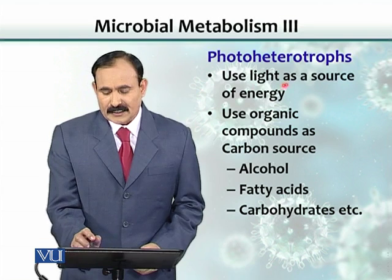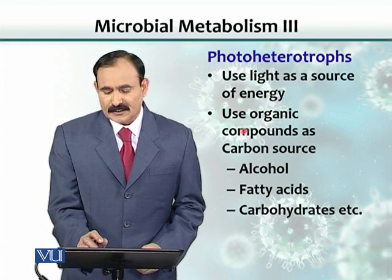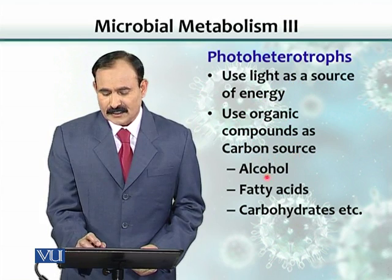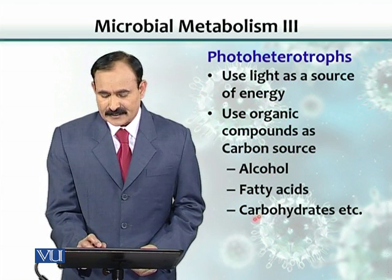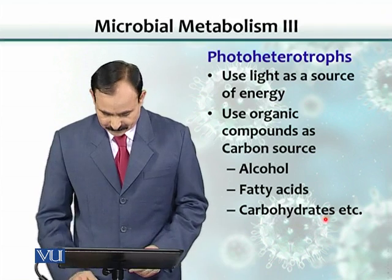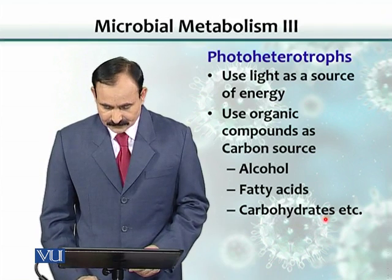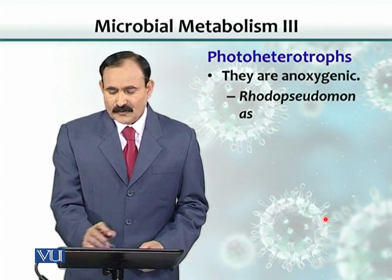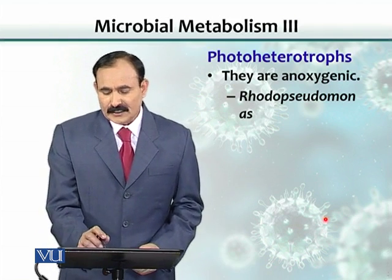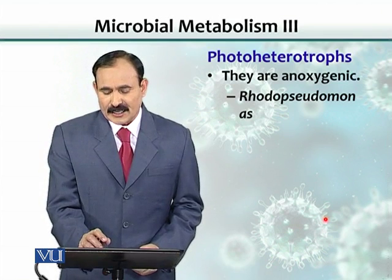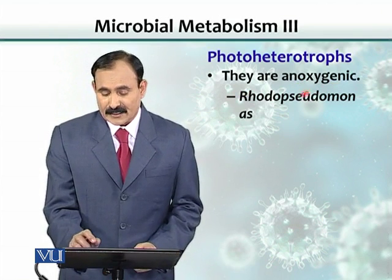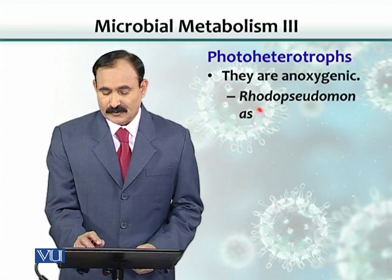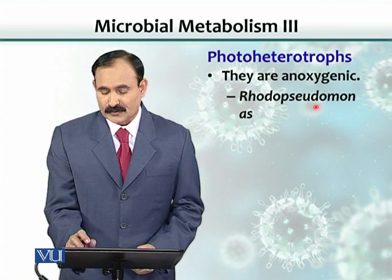Photoheterotrophs use light as a source of energy, use organic compounds as a carbon source, and can produce alcohol, fatty acids, and carbohydrates. Some of them are anoxygenic; an example includes Rhodopseudomonas.